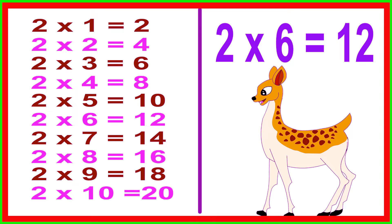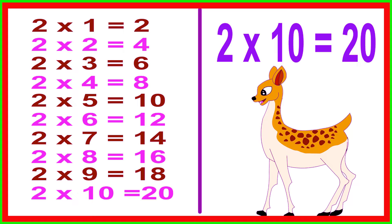2 times 6 equals 12, 2 times 7 equals 14, 2 times 8 equals 16, 2 times 9 equals 18, 2 times 10 equals 20.